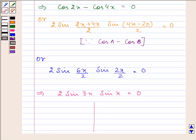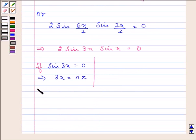The first possibility is if sin 3x equals 0, which means 3x equals nπ. That gives us the value of x as nπ/3.